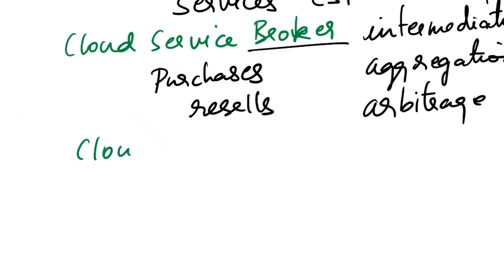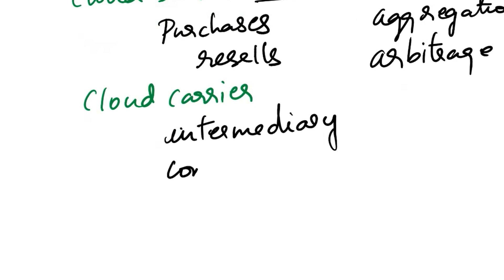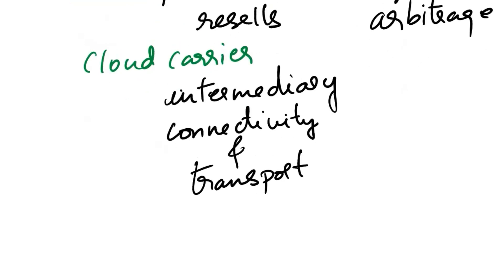Next role is cloud carrier. A carrier is an intermediary providing connectivity and transport of cloud services between the provider and the customer — like, for example, an ISP.